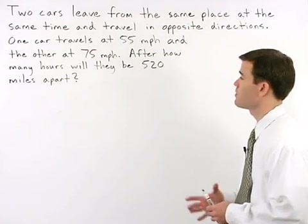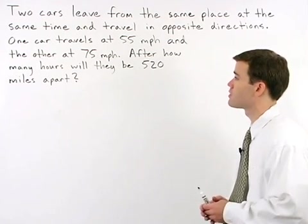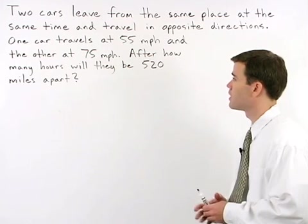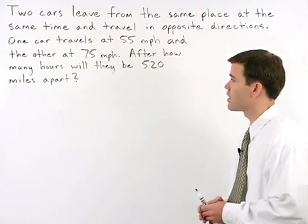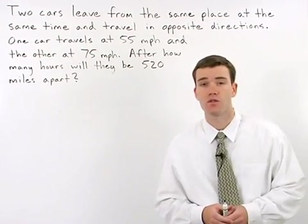Two cars leave from the same place at the same time and travel in opposite directions. One car travels at 55 miles per hour and the other at 75 miles per hour. After how many hours will they be 520 miles apart?